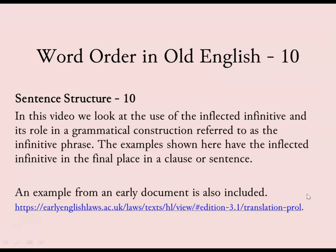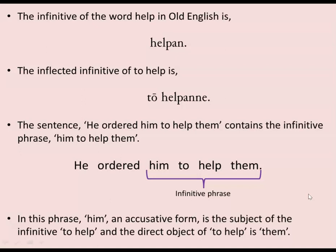The infinitive of the word 'help' in Old English is 'helpan', and the inflected infinitive of 'to help' is 'tō helpanne'. The first infinitive 'helpan' is the dictionary version — any dictionary will give you this infinitive form. This version with 'tō' in front and the '-enne' ending — these sorts of endings with a double 'n' — are the inflected infinitive. So the inflected infinitive of 'help' is 'tō helpanne'.